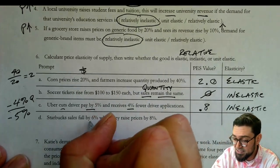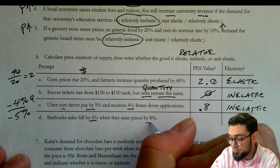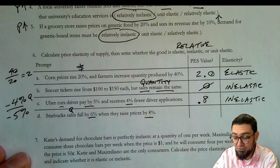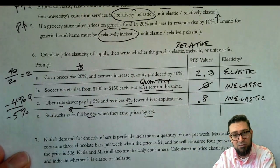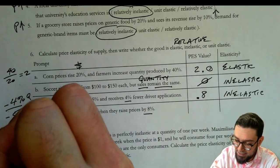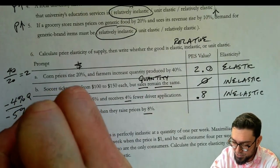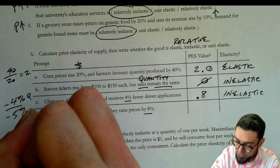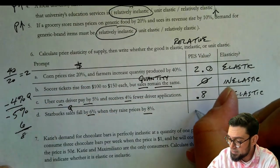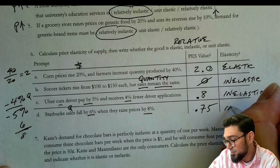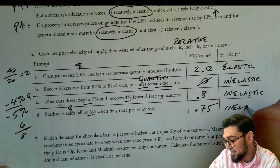Part D: Starbucks sales fall by 6% when they raise prices by 8%. So the quantity — what those sales refer to — goes in the numerator as 6, and the price change of 8 goes in the denominator. That gives us 6 over 8, which is 0.75, so that's inelastic.